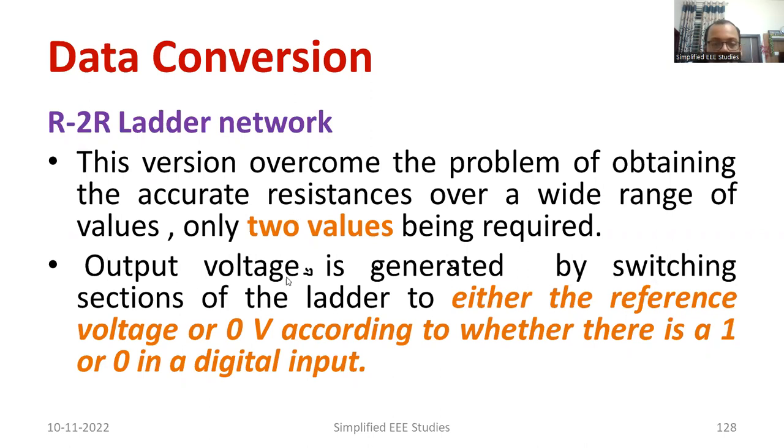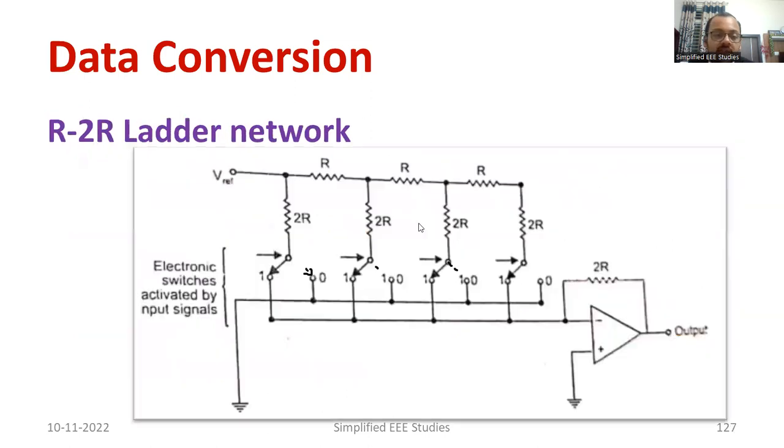Also, the output voltage is generated by switching sections of the ladder to either the reference voltage or 0 voltage according to whether there is 1 or 0 in the digital input. V reference means it shows high and this is showing 0.